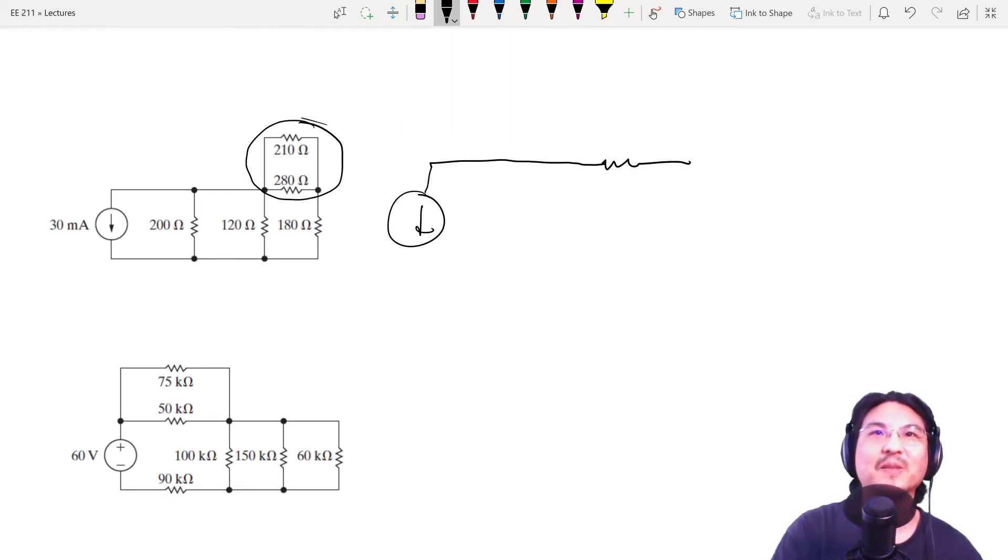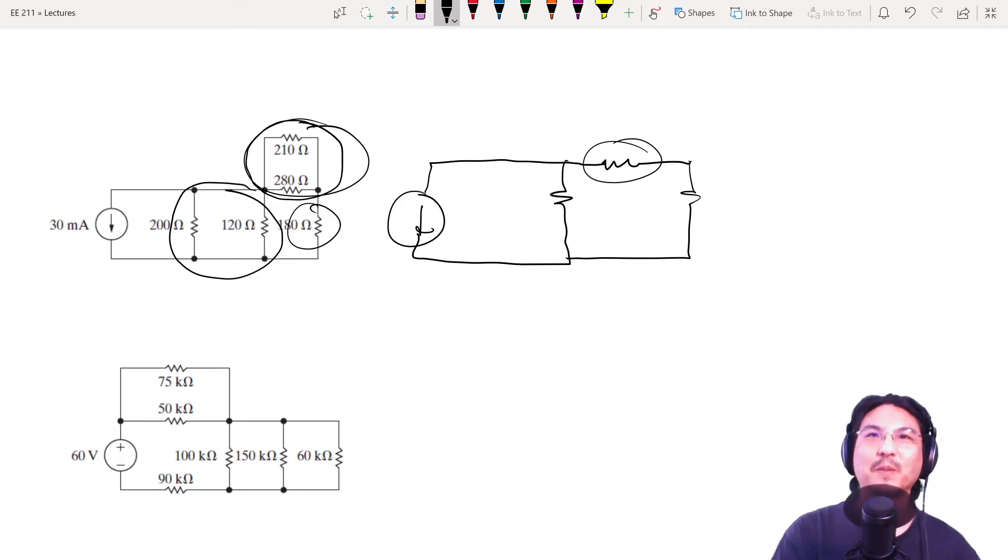...this one, right? These two are in parallel, and then these two are in parallel, so you could replace those two with a single resistor. Then the 180 is still here, right? And then from here, these two are in series, and then those in parallel. Got it?